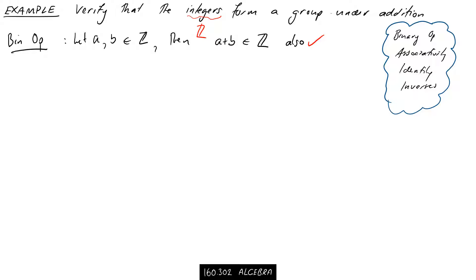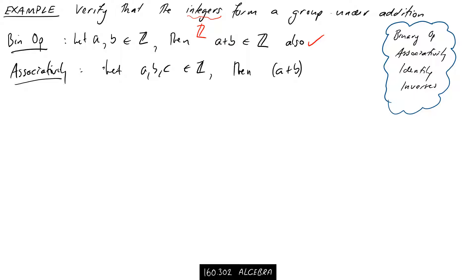Next, associativity. For a simple group like the integers, hopefully you're already happy that for integers A, B, and C, (A plus B) plus C equals A plus (B plus C). We're completely used to this — it's what we've always done. For example, (1 plus 2) plus 3 equals 1 plus (2 plus 3). With a lot of these groups, associativity is something we've already well understood. Sometimes with more exotic groups it can be harder to check.